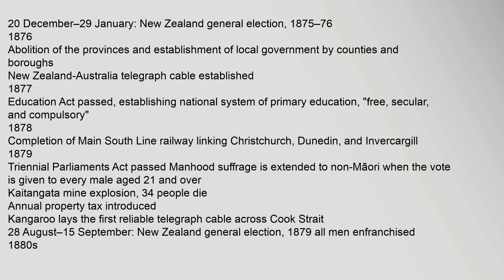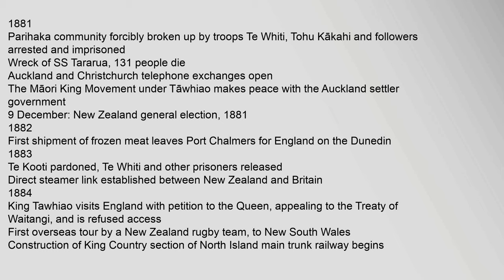28 August – 15 September: New Zealand general election. 1879: All men enfranchised. 1880s. 1881: Parihaka community forcibly broken up by troops. Te Whiti, Tohu Kakahi and followers arrested and imprisoned. Wreck of SS Tararua — 131 people die. Auckland and Christchurch telephone exchanges open. The Maori King movement under Te Tawhiao makes peace with the Auckland settler government.